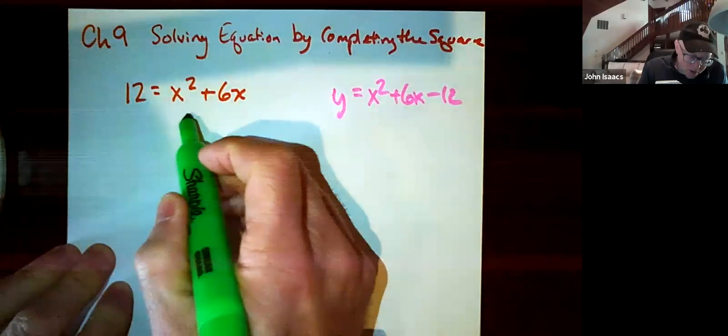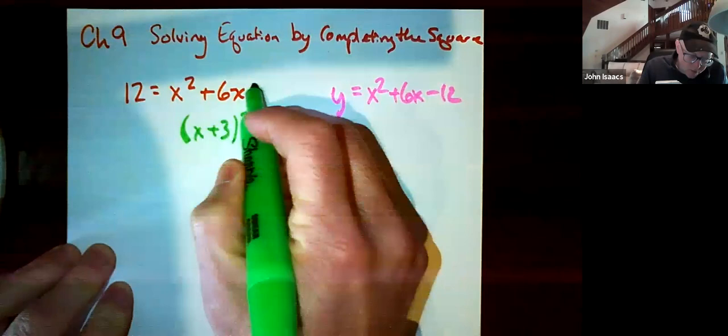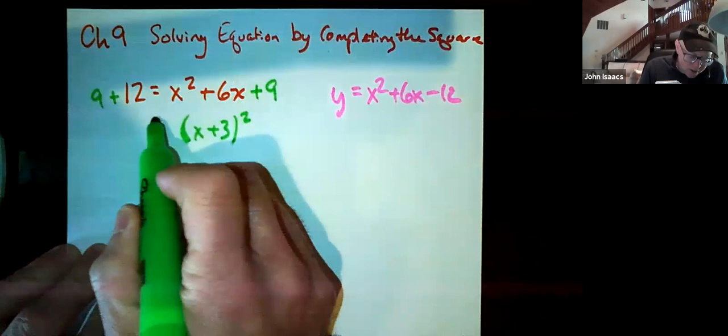So completing the square, that means we're going to wind up with something squared. That something is going to be x plus 3. That means we wind up having to add a 9 here. And we have to add a 9 to the other side. And we wind up with x plus 3 squared equals 21.